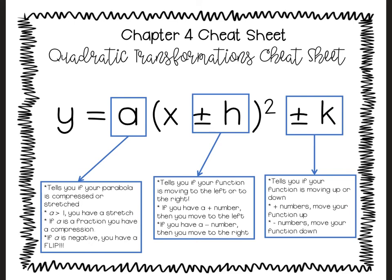If you have not taken a single note this whole video, pause the screen right now and write all of this down, because this is everything compiled into one cheat sheet for you. This is vertex form, and we learned vertex form because that makes it easiest to understand transformations. Sometimes you have the 'a' value in the front: if it's a number bigger than one, it's a stretch; if it's a fraction or decimal, it's going to be compressed; and if it's negative, it's going to flip our whole function over.